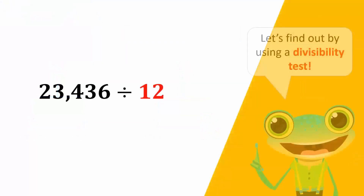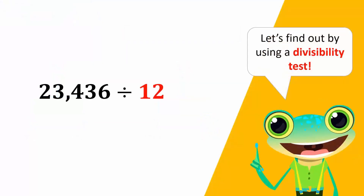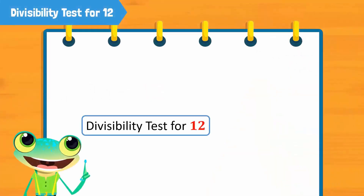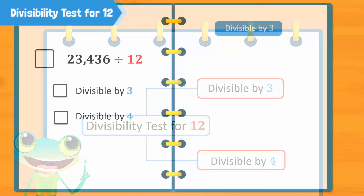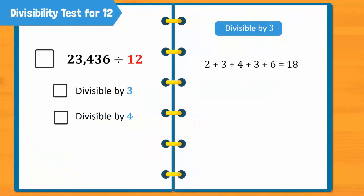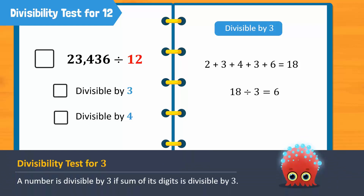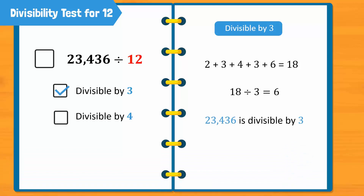Let's see how. Using the divisibility test for 12, let's find out if 23,436 is divisible by 12. Any number is divisible by 12 if it is divisible by both its factors, 3 and 4. Applying the divisibility test of 3, we can see that the sum of the digits of this number is 18, and since 18 is evenly divisible by 3, so is 23,436.